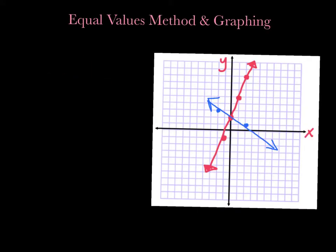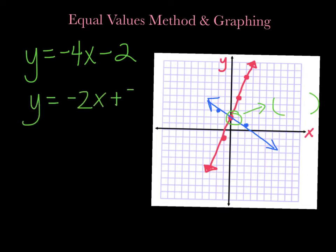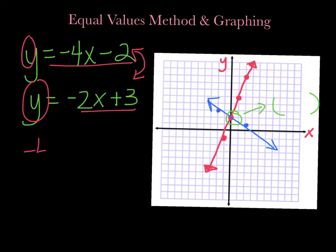Previously when we learned how to solve systems of equations, we used either the equal values method or graphing. When we graphed, we would graph two lines and then see where they crossed — that was our solution to our system of equations. We would also solve it using the equal values method: y equals 4x minus 2 and y equals negative 2x plus 3. If y equals this and y equals that, then those two things have to be equal to each other, and we would just set them equal and solve.